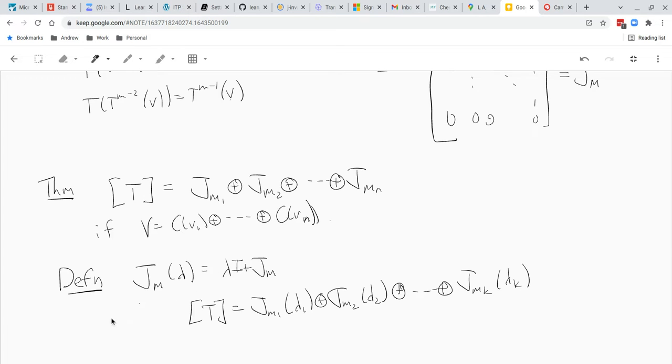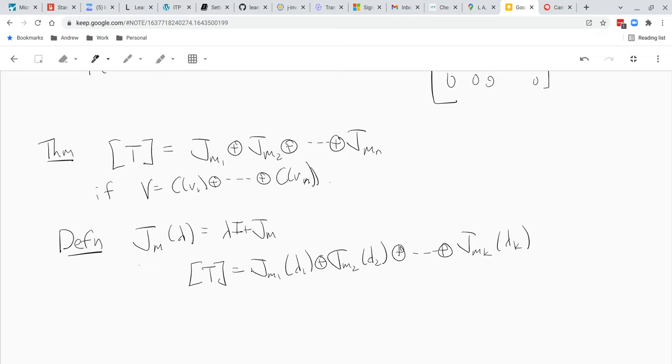Okay. And then the key theorem is that, if whatever T is, you can write it as the direct sum of Jordan matrices with the eigenvalues on the diagonal. Okay.